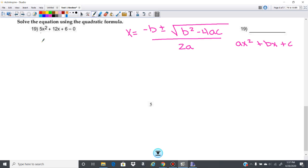So the a is with x squared, meaning in this equation our a is 5, the b is with x, so the b is 12,